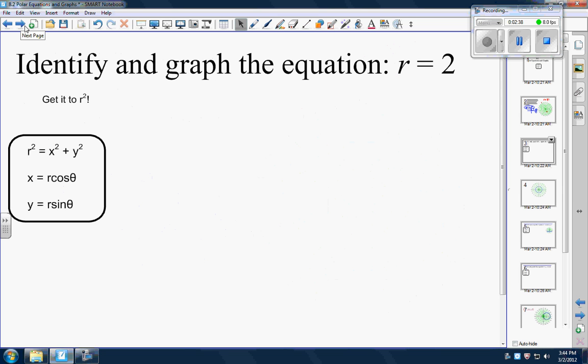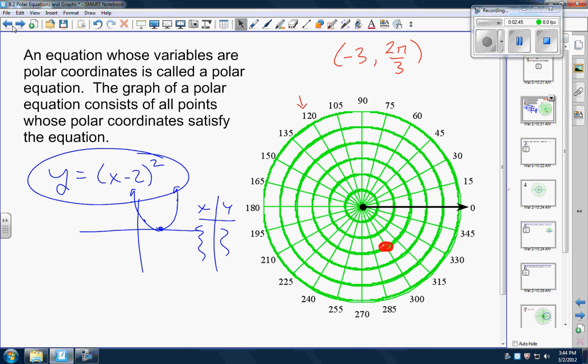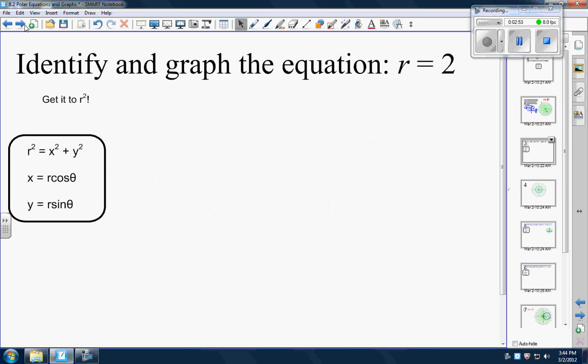First one's this. Identify and graph the equation r equals two. So you'll have a graph like this green one but where is the radius two? What does that mean? Is it at 30 degrees? Whatever. Okay so we're gonna have to convert this.